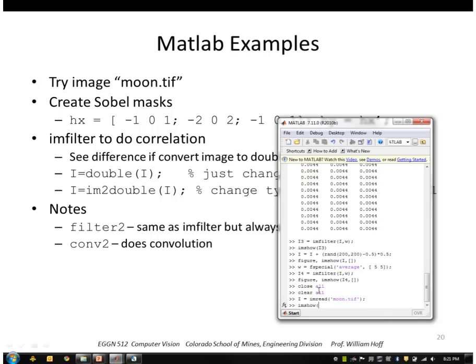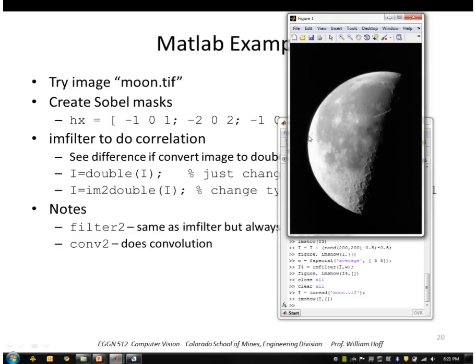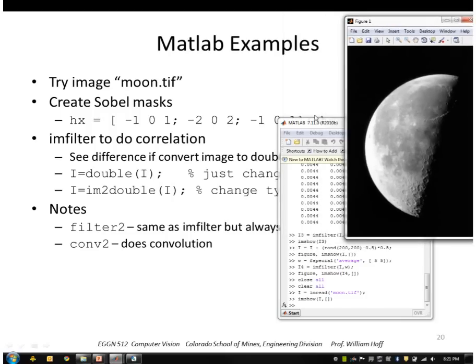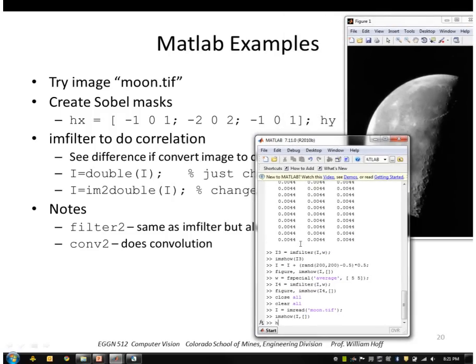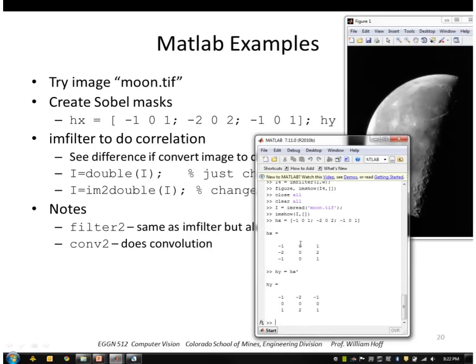So this image has a nice edge all the way around the edge of the moon like that. So I'm going to create by hand a Sobel mask, call it HX, which will be minus one, zero, one, minus two, zero, two, minus one, zero, one. And HY is just the transpose of HX. So if I correlate using IM filter, my image with HX, let's call that DX, and I'll do the same thing with HY, call it DY.